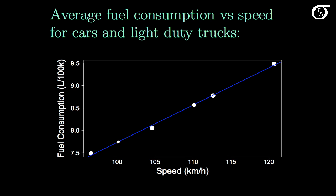That relationship looks so strong that it might be tempting to use it outside the range of the observed data — say, to predict fuel consumption for a speed of 80, something way out in the left tail. But the problem is we do not know what the relationship is out there. The real relationship might be very different from the one we observe in our data.